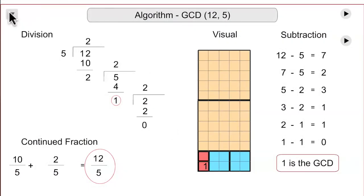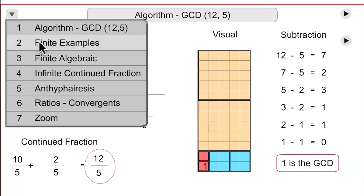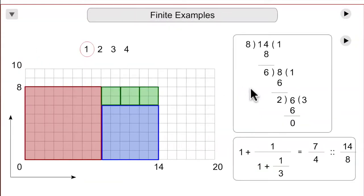A few more examples. Now this would be another method of dividing out the Euclidean algorithm. 8 goes into 14 one time, remainder 6. 6 goes into 8 one time, remainder 2.